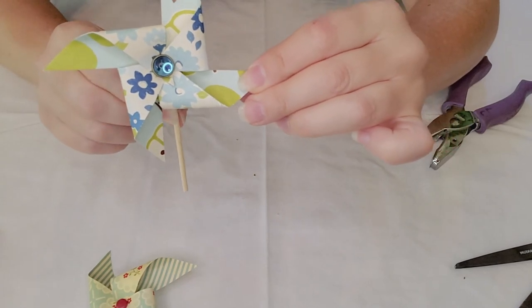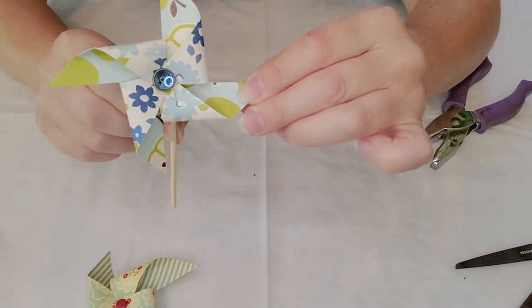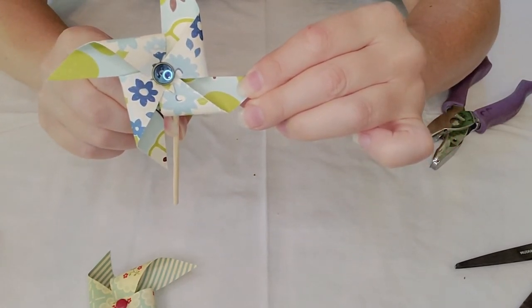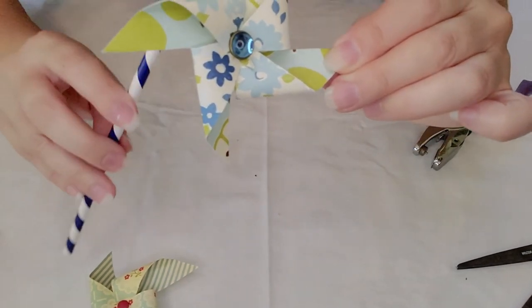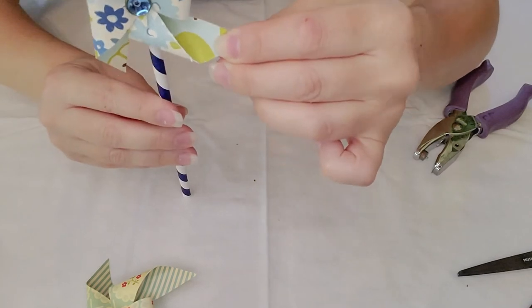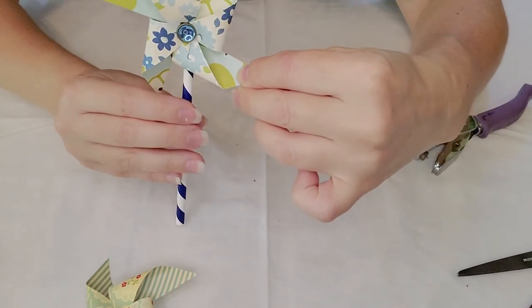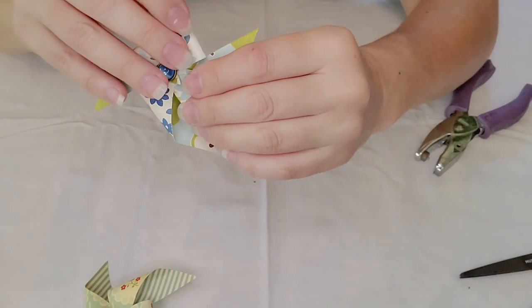All right that one turned out so cute didn't it? So I'm going to go ahead and I'm going to hot glue one of my little cut bamboo skewers to the bottom. Like I said you could also use a straw that you cut down, a paper straw that would be cute too if you don't have skewers.